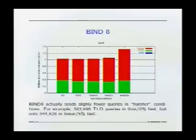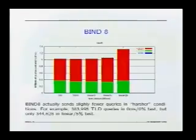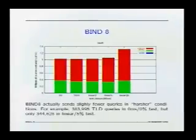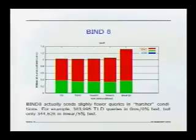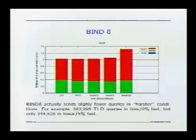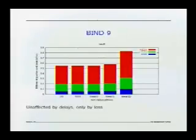Here are all of the results for BIND 8, except for the 100% loss test which I'll show separately. One of the interesting things is that as network conditions get harsher, BIND 8 sends slightly fewer queries — the graphs go down a little bit, especially for the 100-millisecond delays, where there's quite a drop in top-level domain queries. For BIND 9, the number of queries is unaffected by network delays, but only by loss, so for the first three cases the total number of queries is just about the same.